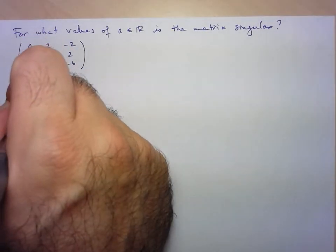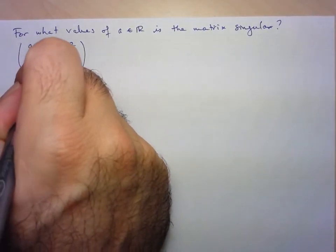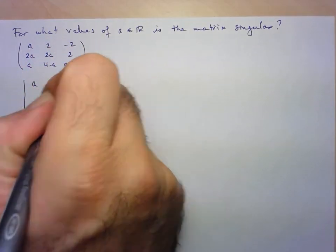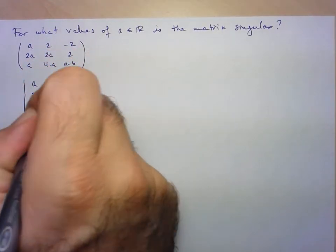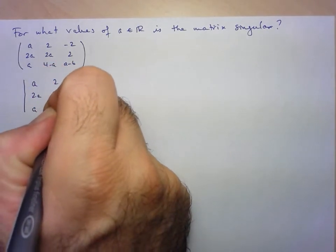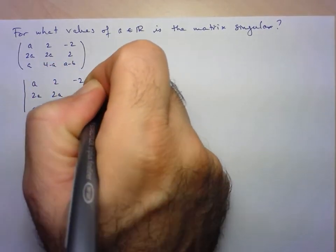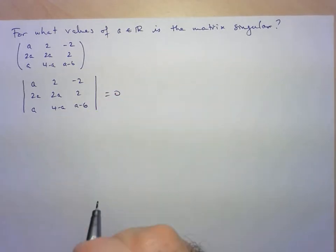So we'll take the determinant of this matrix. So A, 2, negative 2, 2A, 2A, 2, A, 4 minus A, and A minus 6. And the determinant has to be equal to zero. So let's get started here finding the determinant of this matrix.